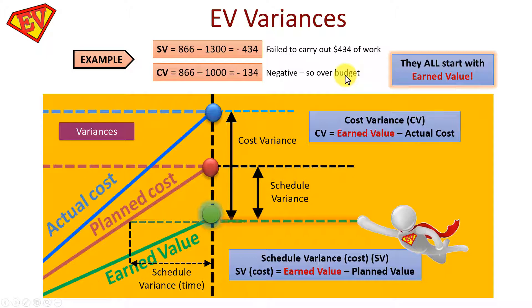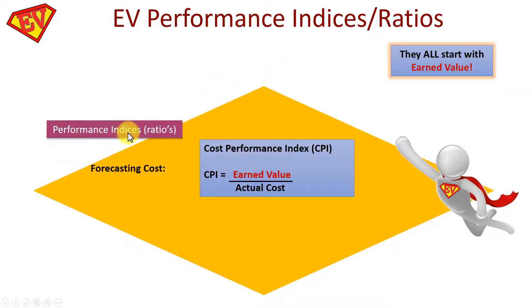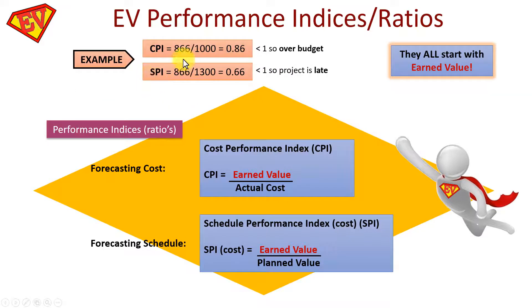For the performance indices, they all start with Earned Value too. CPI = EV ÷ AC, and SPI = EV ÷ PV. Using the same numbers: CPI = 866 ÷ 1000 = 0.86 — less than one, so over budget. SPI = 866 ÷ 1300 = 0.66 — less than one, so the project will come in late. A value of one means on budget and on time; greater than one means you'll underspend or finish early.